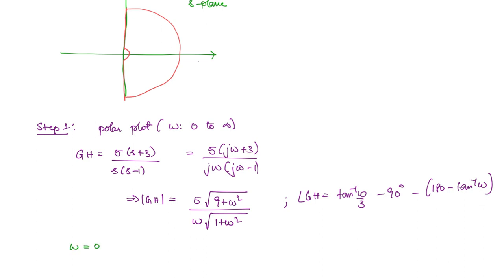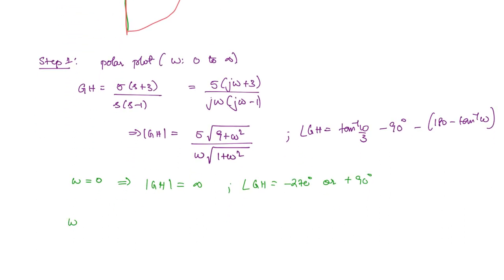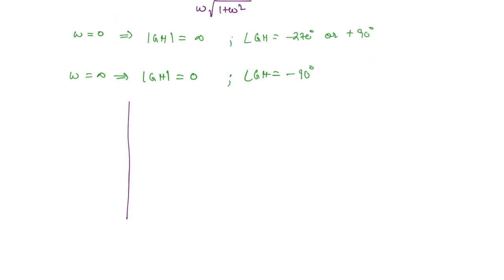When we substitute ω = 0, the magnitude will be infinite and the phase is going to be −270 degrees, or equivalently +90 degrees. When ω = infinity, the magnitude becomes 0 and the phase becomes −90 degrees. So the Nyquist plot starts at infinity at an angle of +90 degrees and ends at the origin at an angle of −90 degrees.